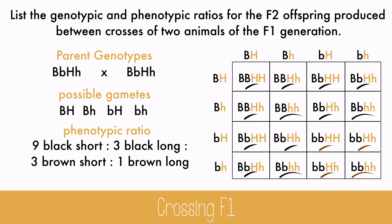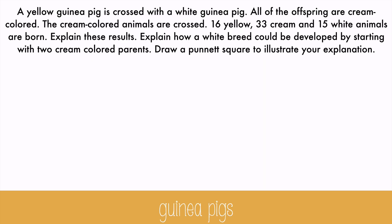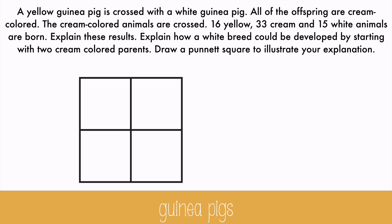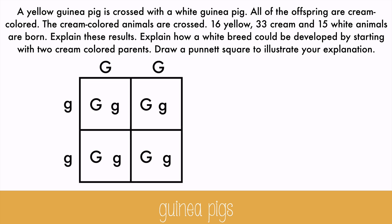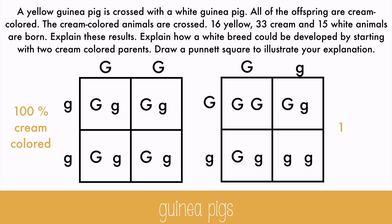Let's look at a problem that uses a monohybrid cross just to review quickly. A yellow guinea pig is crossed with a white guinea pig. All of the offspring are cream colored. The cream colored animals are crossed, and 16 yellow, 33 cream, and 15 white animals are born. The first cross must be homozygous dominant and homozygous recessive, which would explain all of the cream colored animals that are born. Then two of those heterozygous cream guinea pigs are crossed, which will give us the 1 to 2 to 1 ratio of yellow, cream, and white guinea pigs. 16 to 33 to 15 is very close to 1 to 2 to 1, which will confirm this explanation.